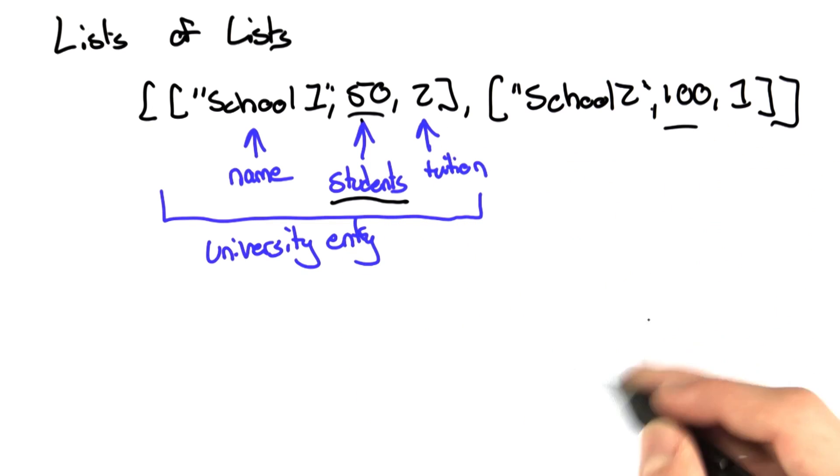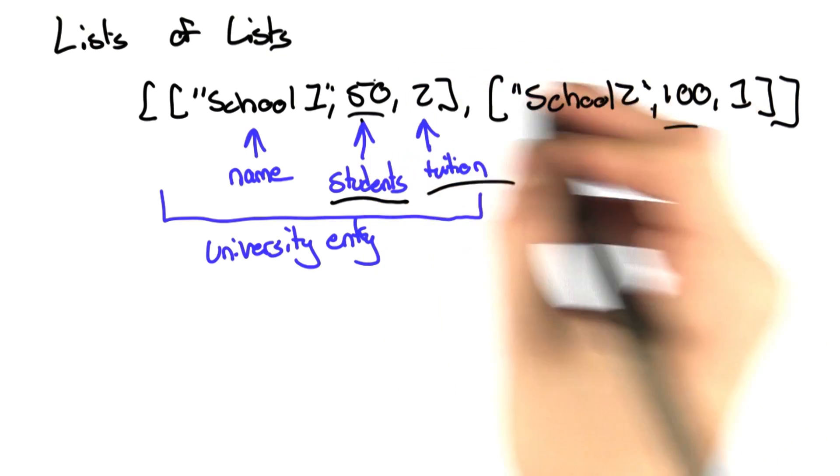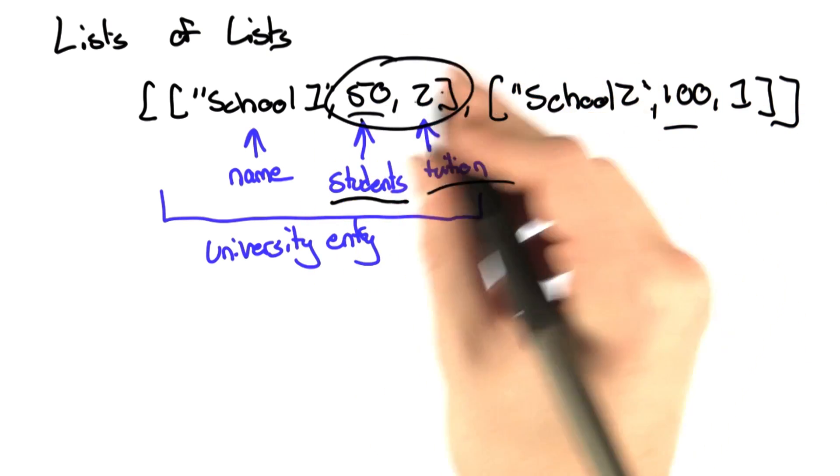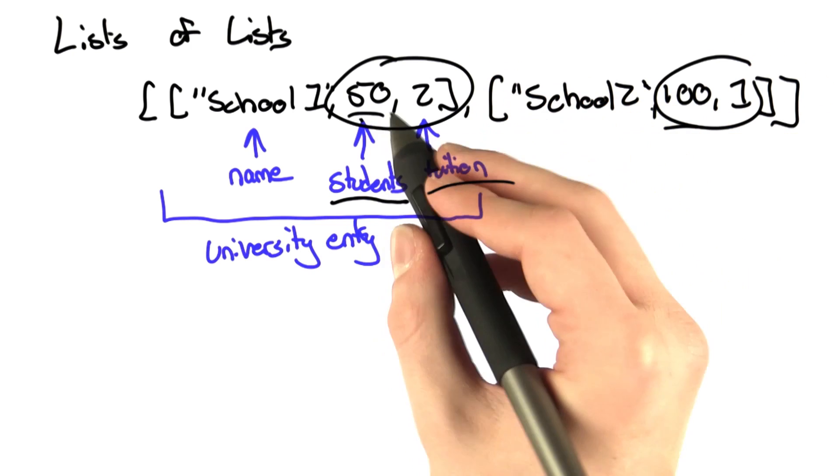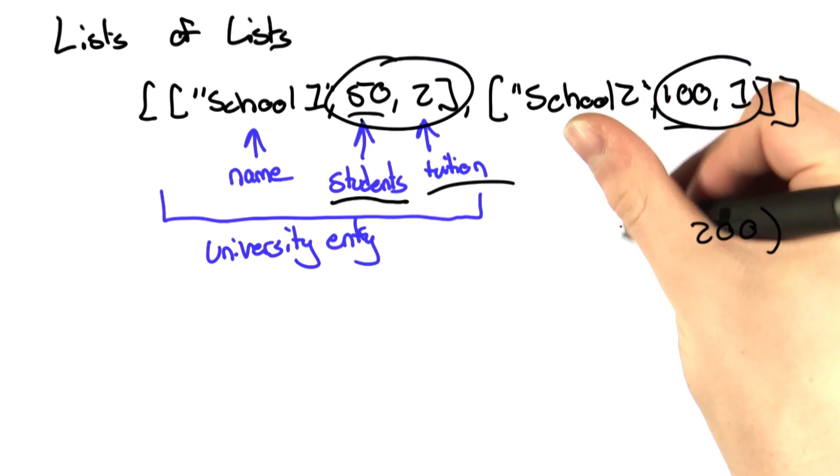And then we're also going to keep a second counter that is the amount of tuition they're paying. So what we're going to do for each entry is multiply these two values and add those. So we're going to have 50 times 2, which is 100, and 100 times 1, which is also 100. So the end result would be the tuition is 200 and the number of students enrolled is 150.